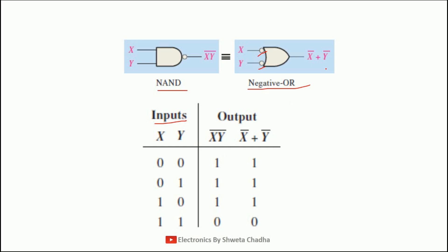We need to prove that this expression is equal to x bar plus y bar. x bar is the reverse of x, y bar is the reverse of y, and there is a plus in between both. So x bar is 1, 1, 0, 0. Similarly, y bar will be 1, 0, 1, 0, and there is a plus in between both. So 1 plus 1 = 1, 1 plus 0 = 1, 0 plus 1 = 1, and 0 plus 0 = 0. Both expressions are equal to each other. Hence we have verified with the help of a truth table.